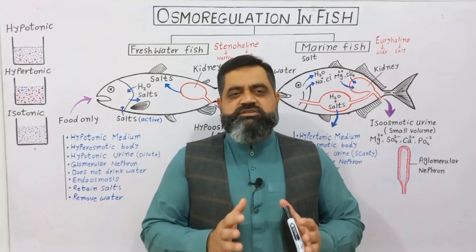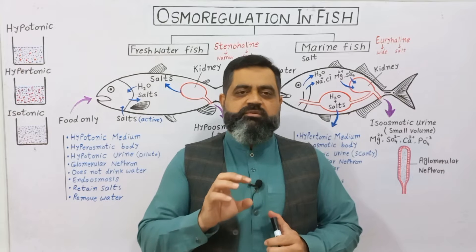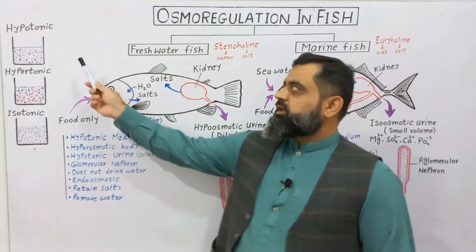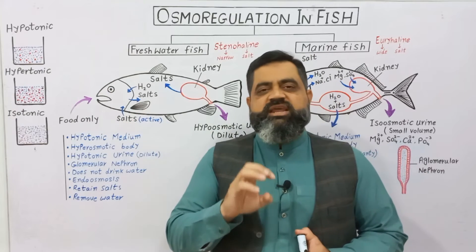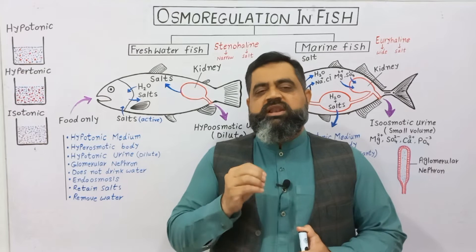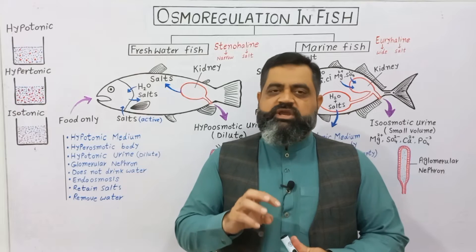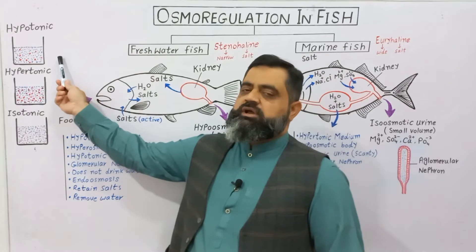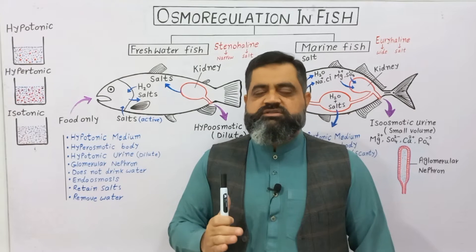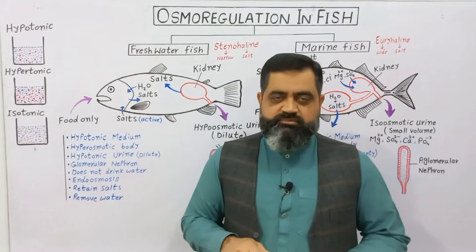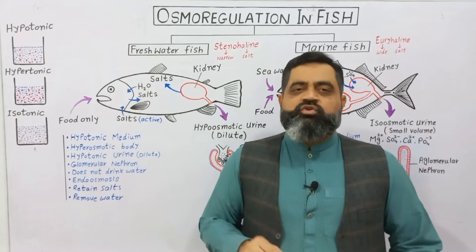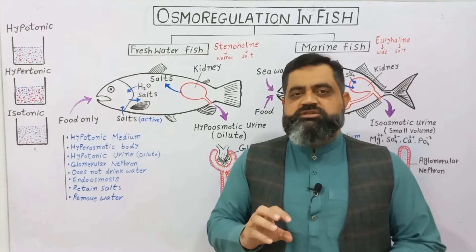First of all, to understand this topic we have to know some terminology. The first term is hypotonic. Hypo means less, tonic means solute — a solution which contains a less amount of solutes or salts is known as hypotonic. For example, I have taken a beaker containing 100 ml of water and added 5 grams of salt, dissolved completely. This solution contains very little amount of salt, so it is known as hypotonic.